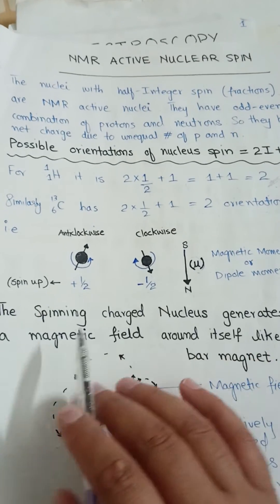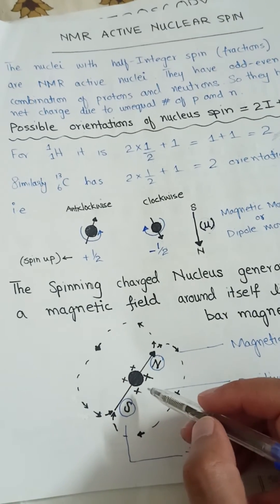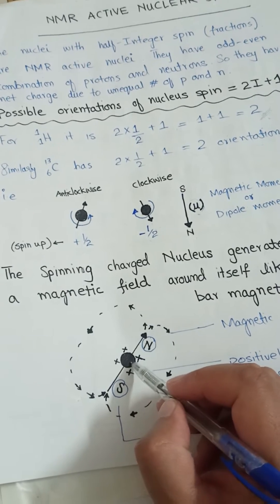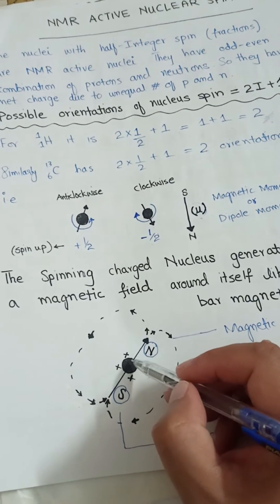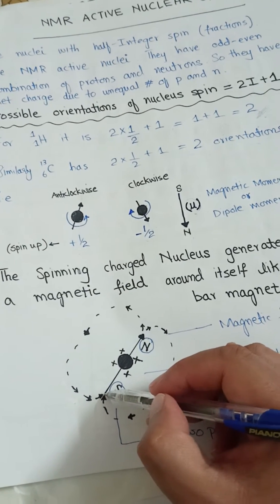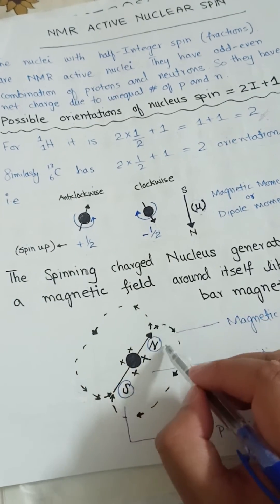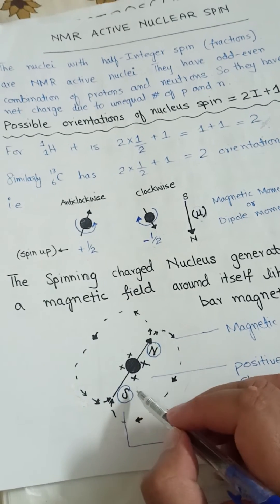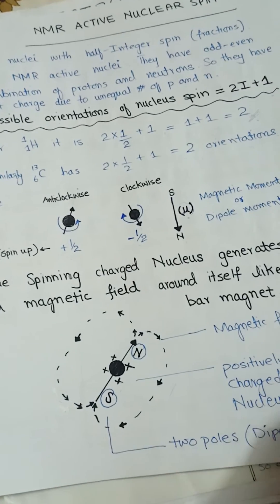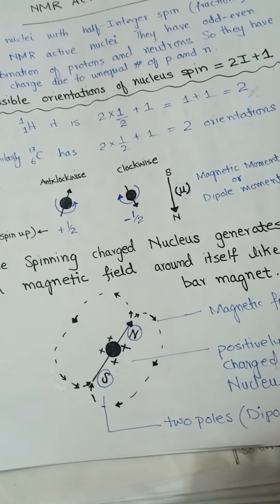The spinning charged nucleus generates a magnetic field around itself, just like a bar magnet. The nucleus contains positive charge due to protons, and when this charged body spins it produces a magnetic field with direction from south to north. This acts exactly like a bar magnet with south and north poles, producing the same kind of magnetic field, and due to these two poles the nuclear spin has an effective dipole moment.